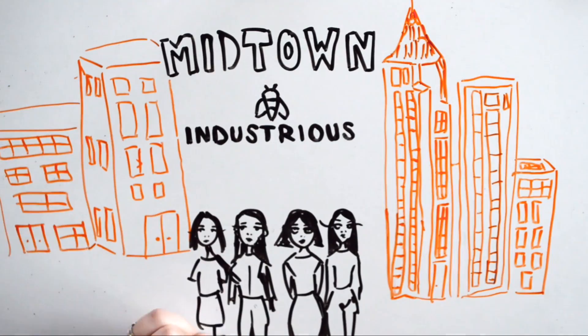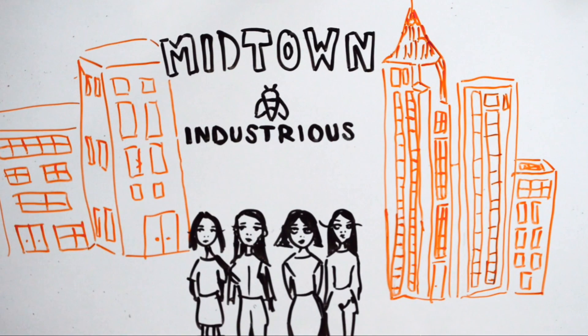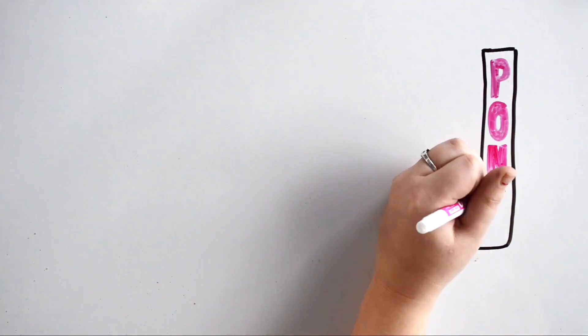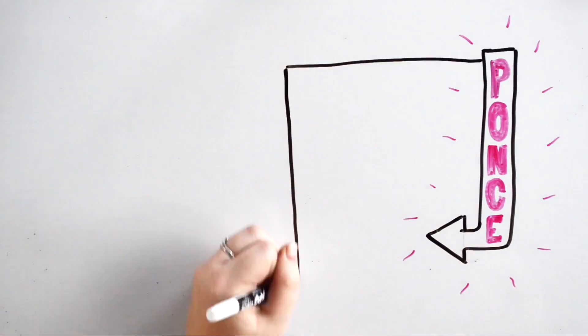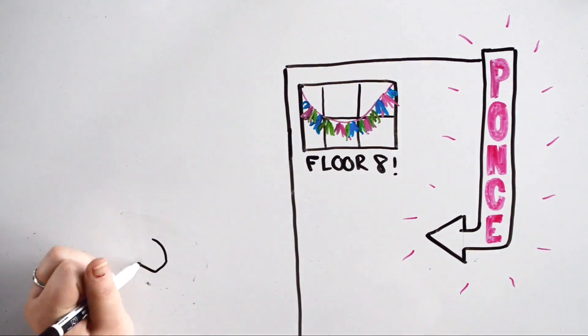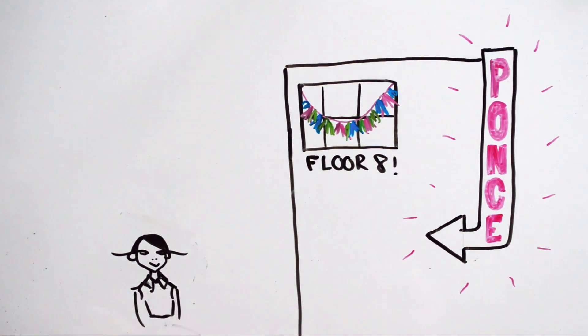And we grew up a little bit, grew by a few more teammates, continued to grow, and finally got the opportunity to move to Ponce. And we were the first people in the Industrious Midtown location and the first people in the Ponce location, which we were really proud of. Of course, we put up our colorful banner first thing and made ourselves stand out in the co-working space.